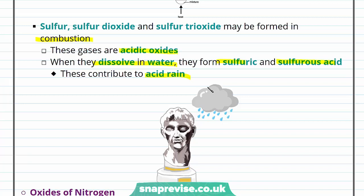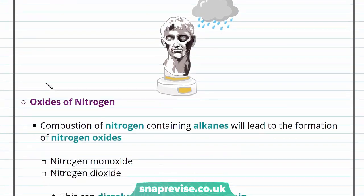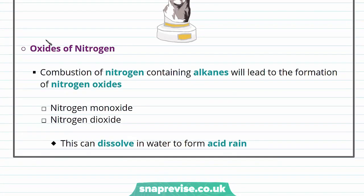Fuels may also be contaminated with nitrogen, so combustion of nitrogen-containing alkanes will lead to the formation of nitrogen oxides, including nitrogen monoxide and nitrogen dioxide. These, in a similar way to the oxides of sulphur, can dissolve in water to further worsen the problem of acid rain.